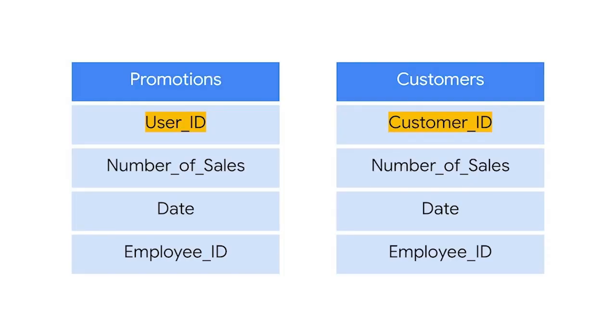It's also important to have consistent formatting across all of the data entries in the database. Every data entry is an instance of the schema. For example, imagine we have two transactional systems being combined into one database — one tracks promotions with a user ID column and the other tracks sales with a customer ID column. To be consistent, in our warehouse schema we'll want to use just one of these columns. If data is stored as string type instead of numerical data, it can't be used in calculations. Additionally, if any of the data entries have columns that are empty or missing values, this might cause issues.